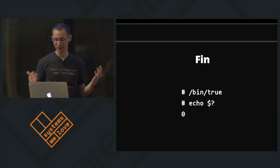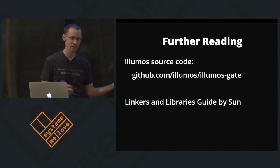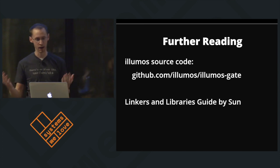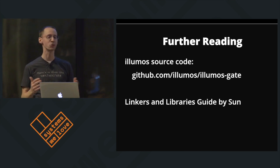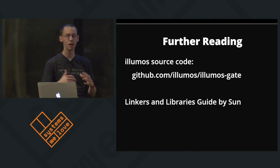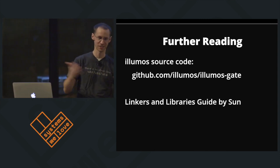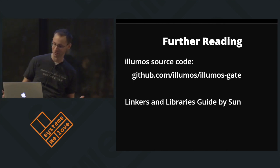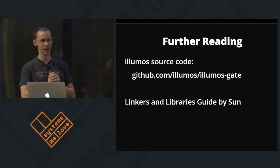I hope this was a nice look into some of the moving pieces that happen when you call exec. Further reading: this was based on an Illumos system. I'm biased because I work on Illumos, but I think it is clearer code to read than the Linux kernel. If you're interested in more on this topic, the Illumos source code is great - you can go to user/src/uts, that's where the kernel is, all the fun stuff. And in terms of libraries, there's the Linkers and Libraries Guide by Sun.